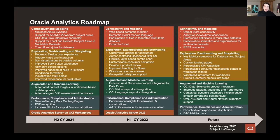An update on the Oracle Analytics roadmap — we just had the 6.4 version release. Last year we had over 100 features released. In the current half of the year: Export to Excel, web-based Semantic Modeler, and OCI Vision in-product integration. Moving to the second half: Key Metric Semantics for data sets and subject areas, DV scheduled exports and distribution. Next month, Gabby will discuss what to expect for the March version release.